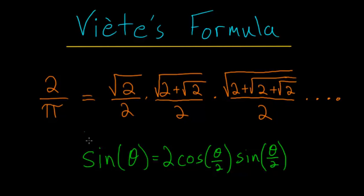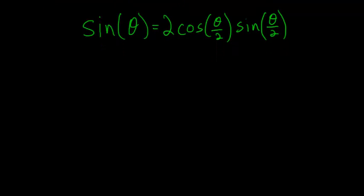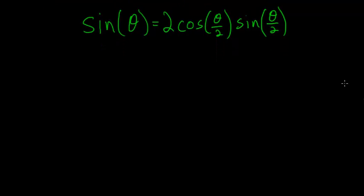In this video, I'm going to use this trigonometric identity to re-derive Viète's formula for ourselves. The sine of theta is equal to twice the cosine of theta over 2 multiplied by the sine of theta over 2.